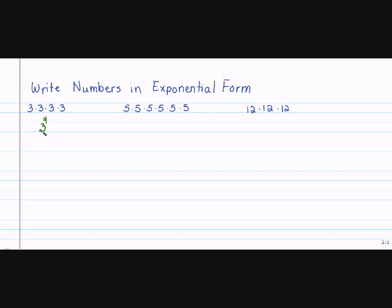Now let's write the next one in exponential form. My base is what I multiply over and over again, so my base is 5. My exponent tells me how many times I multiplied it: 1, 2, 3, 4, 5, 6. So that's 5 to the sixth power.